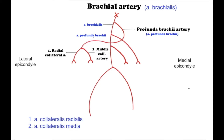Hi everyone, it's SchematicMet and today we are going to talk about brachial artery and its terminal branches schematically. The brachial artery is a continuation of the axillary artery past the lower border of the teres major. It is the main supply of blood for the arm. The brachial artery gives rise to the following branches.